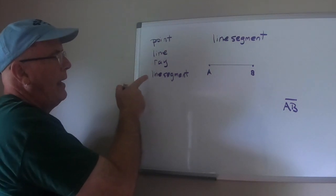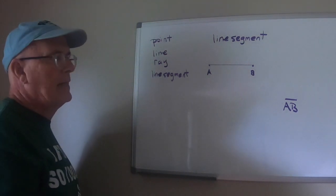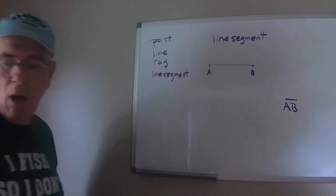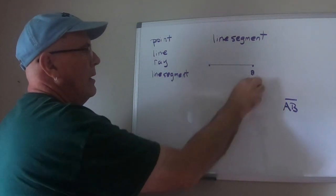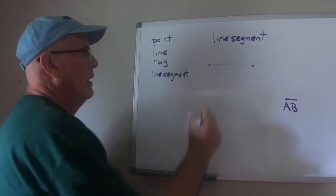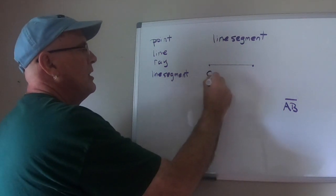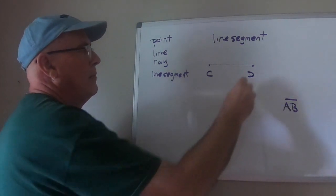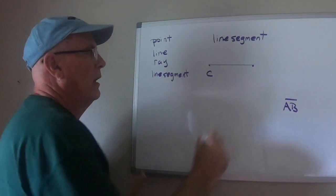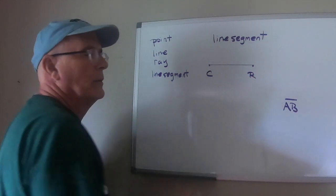We're going to get into angles next but this is point, line, ray and line segment and it doesn't have to be A, B. It won't always be A, B. It could easily be line C, D and it doesn't always have to be in that order. It could be line C, D, R.